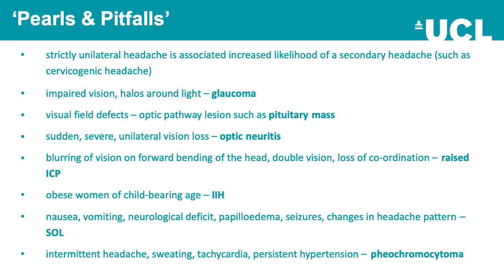Some pearls and pitfalls in recognizing acute headache: strictly unilateral headache is associated with increased likelihood of a secondary headache such as cervicogenic headache. Impaired vision or halos around light should raise concern for acute glaucoma. Visual field defects should prompt thinking about an optic pathway lesion such as a pituitary mass. Sudden severe unilateral vision loss should raise concern for optic neuritis, which is an ophthalmic emergency. Blurring of vision on forward bending, double vision, and loss of coordination should raise concern about raised intracranial pressure. Obese women of childbearing age often have idiopathic intracranial hypertension.